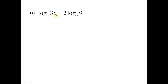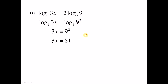Question C. We try to solve this by finding the values of x. First we check whether they have the same base — they do, so we don't have to change the base. Since they have the same base, we can compare values, but there's a coefficient of 2 here. So first we use the power law and bring the 2 up, making it 9 to the power of 2. Now since there's no coefficient in front, we can compare: 3x equals to 9 to the power of 2, which is 81. Divide by 3, you get 27.